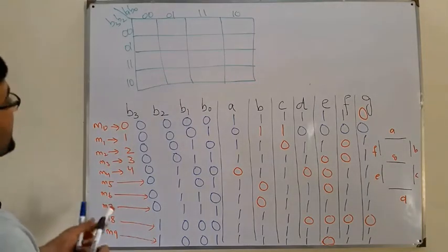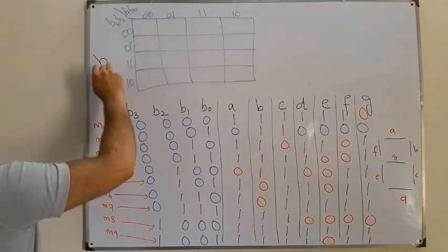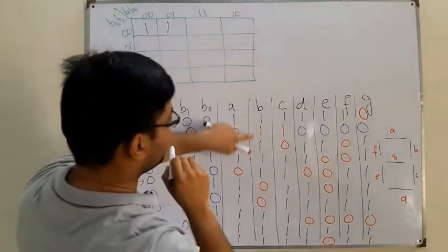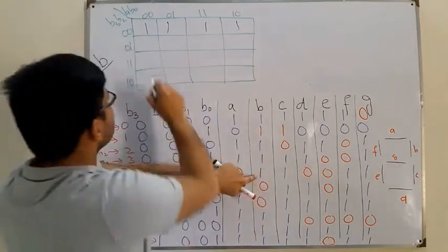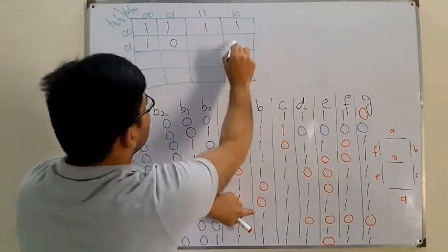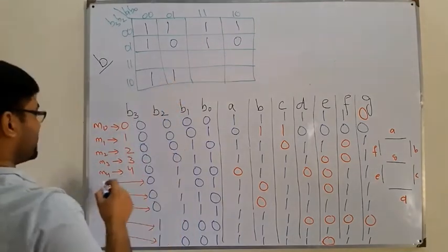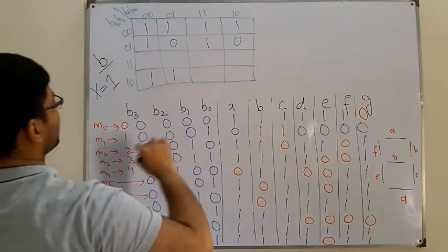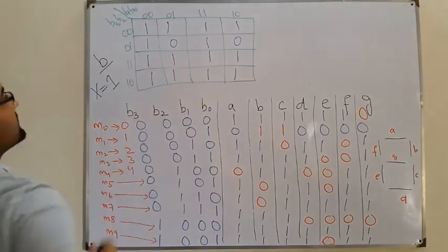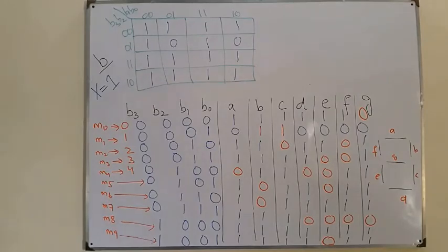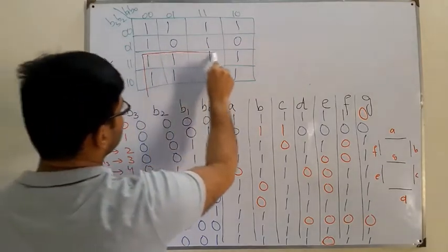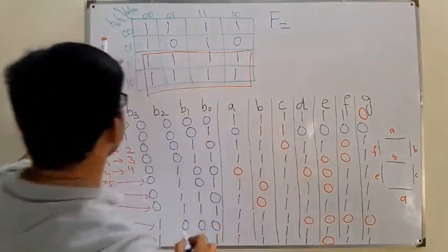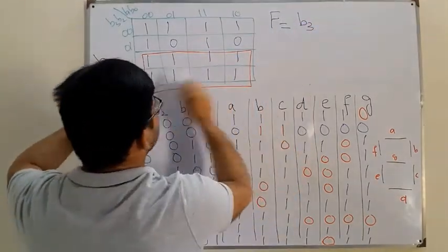Now solving for segment B using a new K-map. The values filled in are: 1, 1, 1, 1, 1, 1, 1, 1, 1, 0, 0, 1, 1, 1, 1. The rest are don't cares which we write directly as 1s. We look for a group of 8 ones first — we find one group where B3 is not changing.